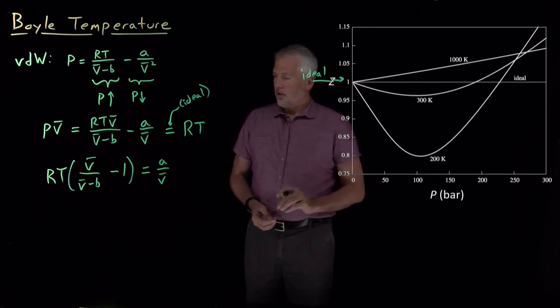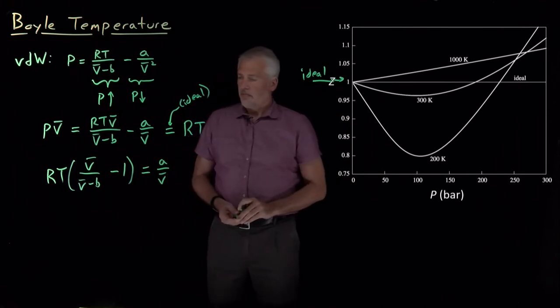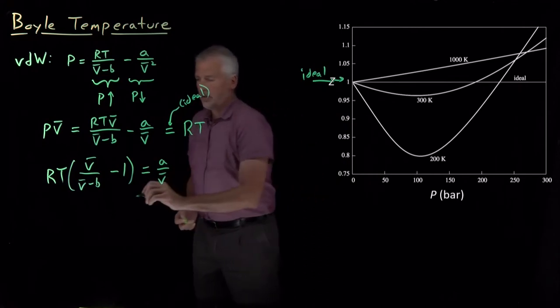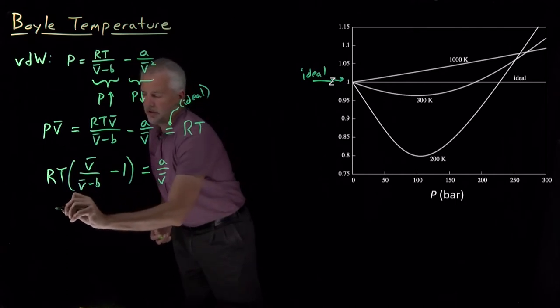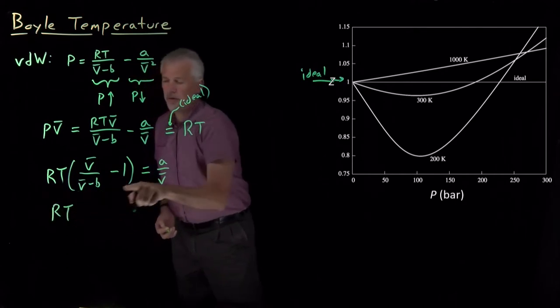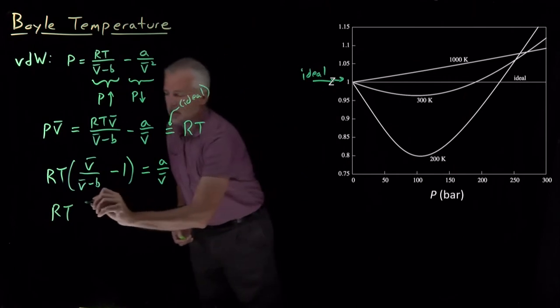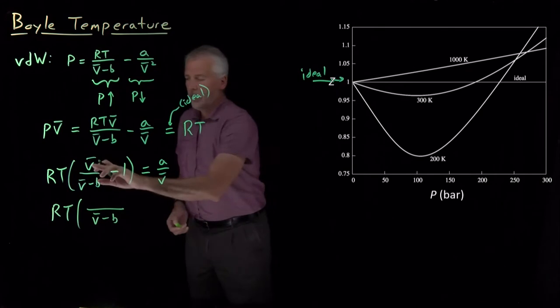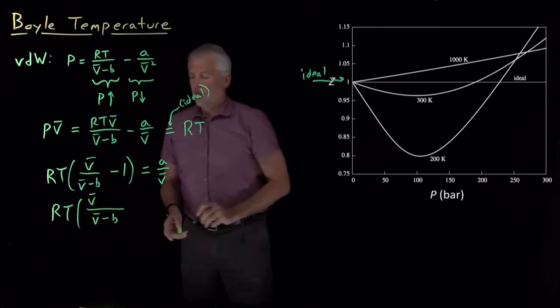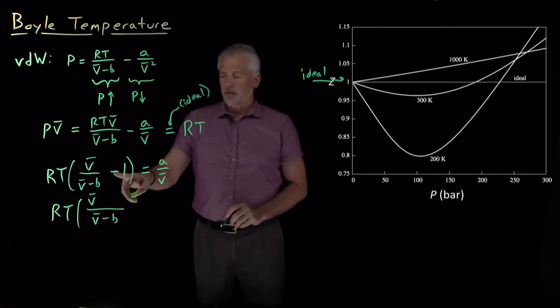All right, so we've got this expression. Let's first rearrange this quantity in parentheses to put that all in one fraction. So if I make the denominator look like V-bar minus B, the first term is V-bar in the numerator. The second term, if I put it over a denominator of V-bar minus B, I need to subtract.